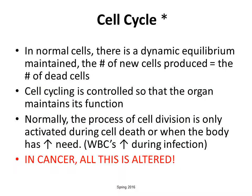Let's talk about the cell cycle. In normal cells, there's a dynamic equilibrium — the number of new cells produced equals the number of dead cells. That's how we maintain tissue health. Cell cycling is controlled so that the organ maintains its function. A disease can occur because of an overload of cell cycling. For example, when someone has psoriasis, there are too many skin cells being produced, which is an abnormality of skin cell production. Normally, the process of cell division is only activated during cell death or when the body has a need.